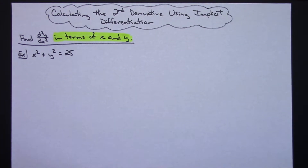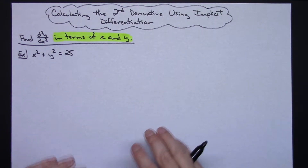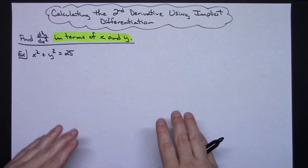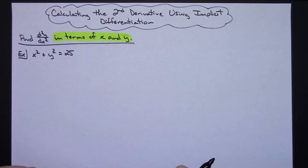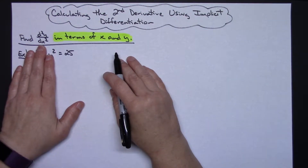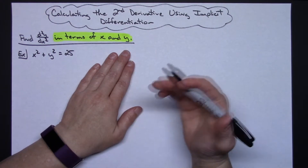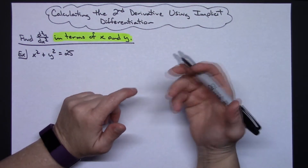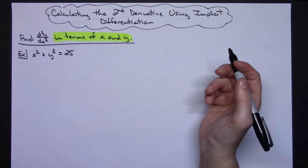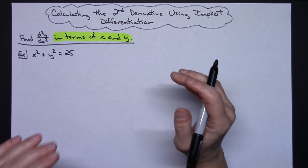In this video I'm going to only work out one example because of how many different substitutions have to be done and shown in detail to calculate a second derivative using implicit differentiation. I might also note that this does say find the second derivative in terms of x and y, which is what causes you to have to do lots of substitutions after you get that first and second derivative calculated.